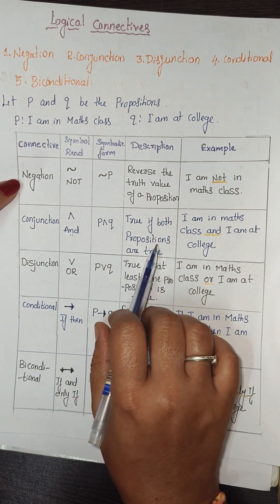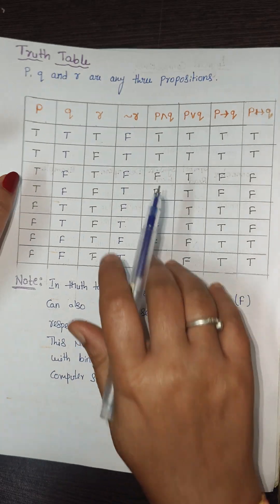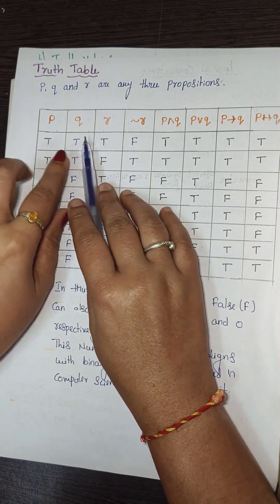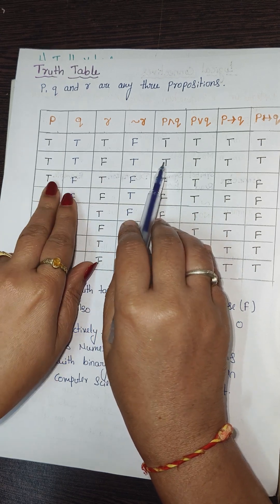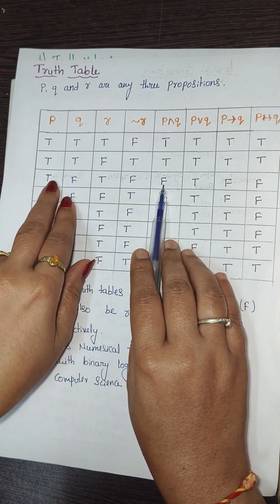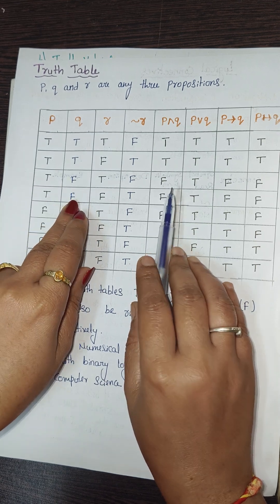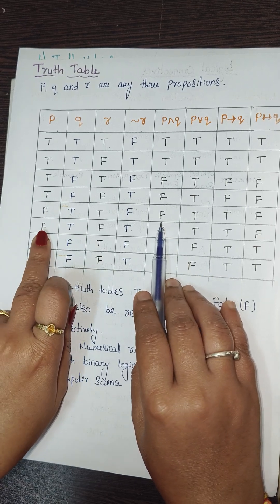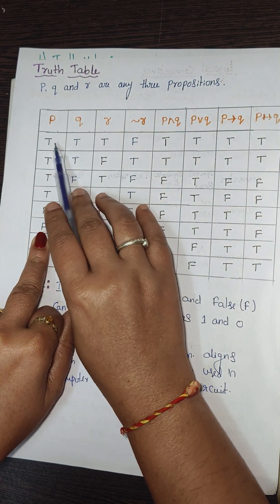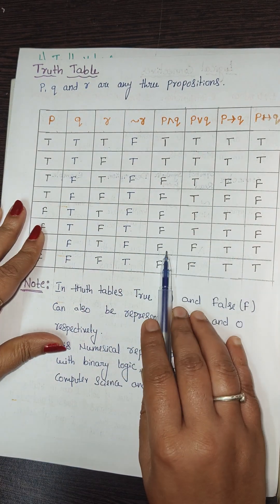For conjunction (p ∧ q), it is true only when both propositions are true. If p is T and q is T, result is T. If p is T and q is F, it is F. If p is F and q is T, it is F. All remaining combinations are false.